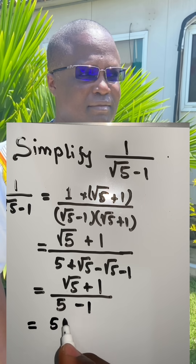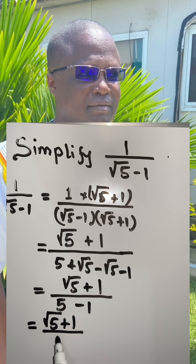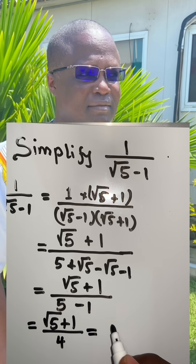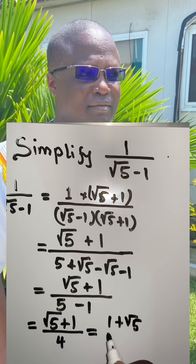So we get root 5 plus 1, over 5 minus 1 which is 4, which you can further write as 1 plus root 5 divided by 4.